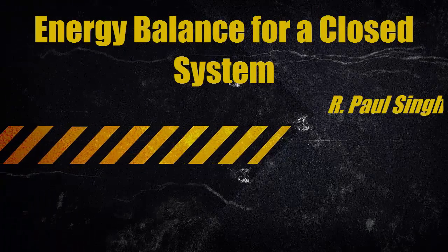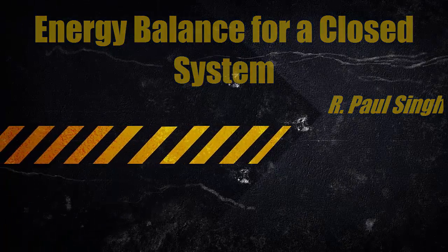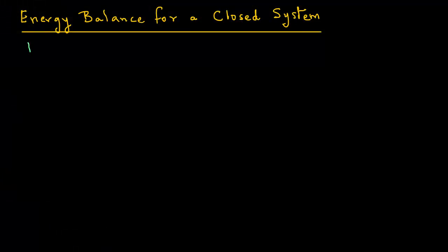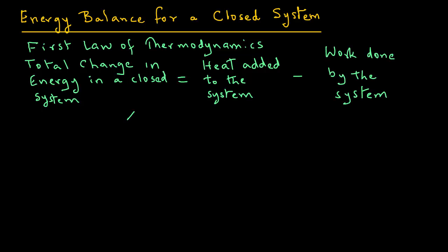Let's consider energy balance for a closed system that involves both work and heat. We will use the first law of thermodynamics that tells us that total change in energy in a closed system equals the heat added to the system minus the work done by the system. So we can write that as delta E equals Q minus W.